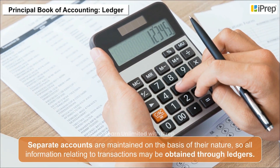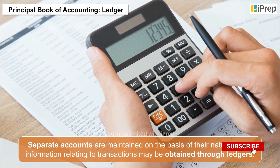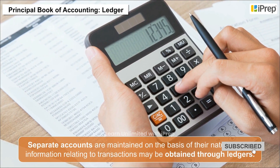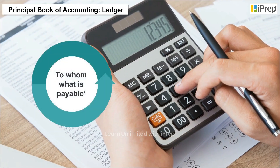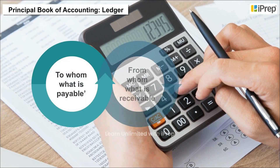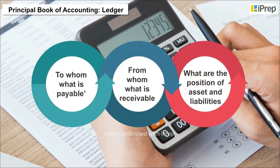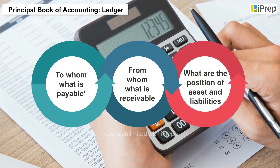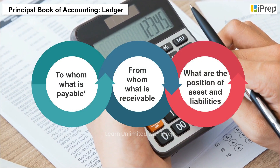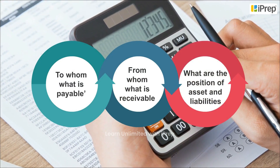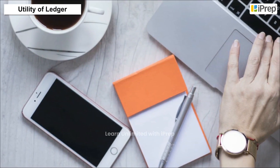All information relating to transactions may be obtained through ledgers, such as to whom what is payable, from whom what is receivable, and what are the positions of assets and liabilities of the business.